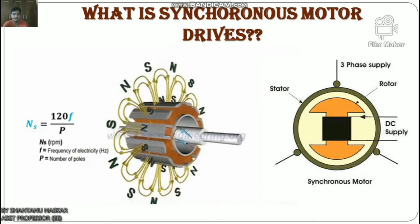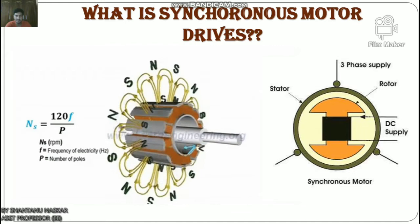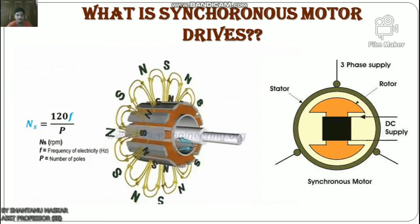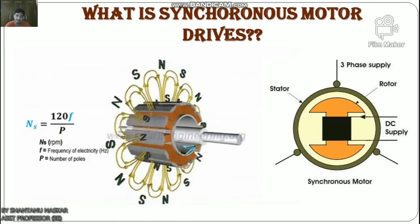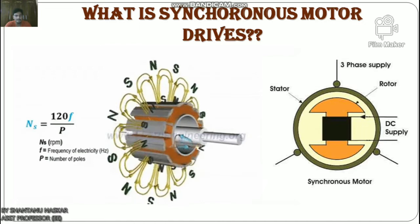What is a synchronous motor drive? As the name suggests, the synchronous motor rotates at synchronous speed. The main advantages of synchronous motors are that they run on three-phase AC supply, with DC supply given to the rotor. When running at synchronous speed, the losses are very minimal.